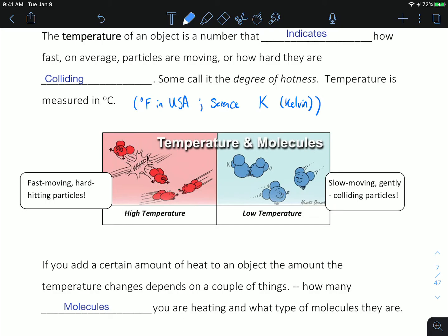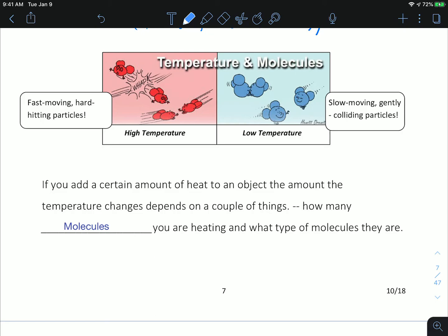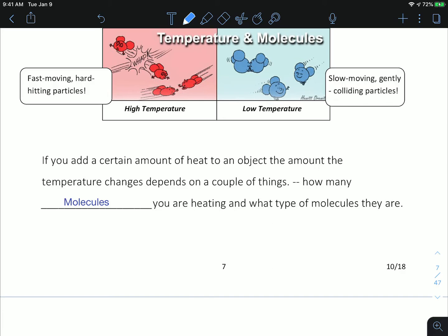The Celsius scale has negative values, so negative 10 degrees Celsius means things are moving slower but they're still moving. In fact, you have to go to negative 200-something before you reach absolute zero. If we think about the temperature of molecules in a high temperature situation, we have very fast moving particles that are hitting each other very hard with lots of energy. In a low temperature situation, the particles are moving slowly and they're gently colliding.